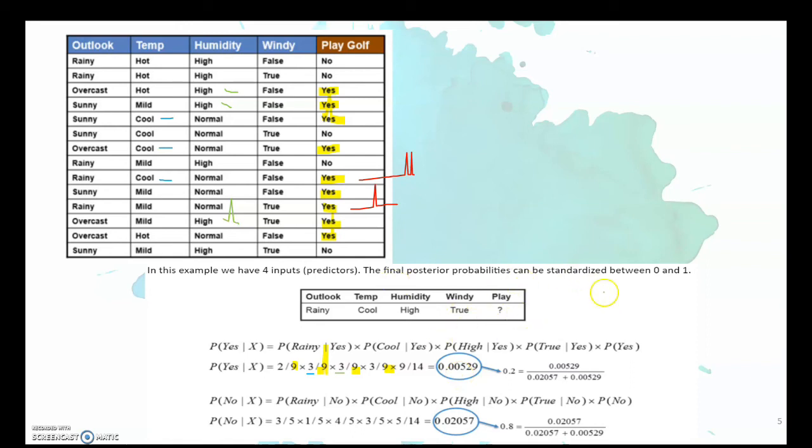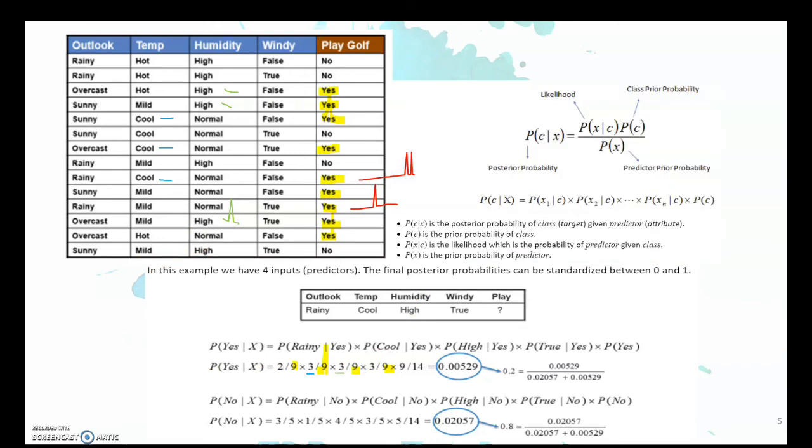This you can standardize the value between zero to one by using the calculator. And from this we can see that the larger value is no, not going to play, so this is quite consistent with our normal calculations. Now in this example you can benefit that the Naive Bayes is a systematic measure to be able to calculate the likely output to do prediction and classification as well.